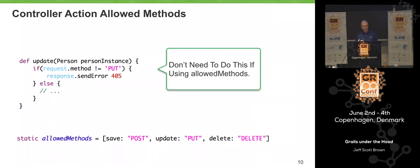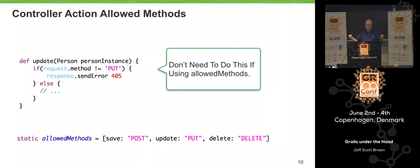You don't have to write that imperative logic yourself. Instead, inside your controller you can declare a static property called 'allowedMethods' and assign it a map. The keys in this map correspond to action names in your controller, and the values specify which HTTP method is allowed. So 'update' maps to 'PUT', and 'save' maps to 'POST'. If any other kind of HTTP request tries to invoke the update action — a GET, a HEAD, a TRACE — a 405 will be generated. You declaratively express the rules and the framework imposes them.